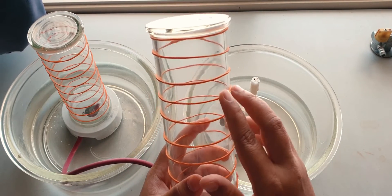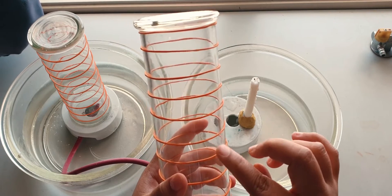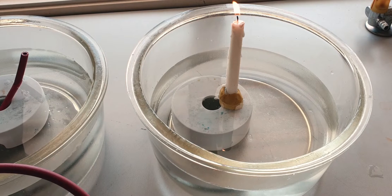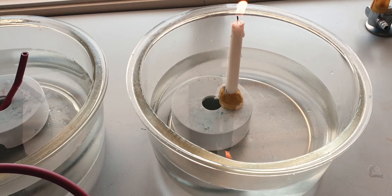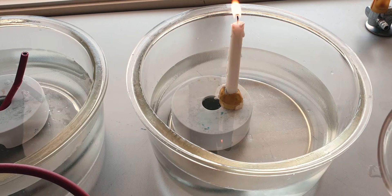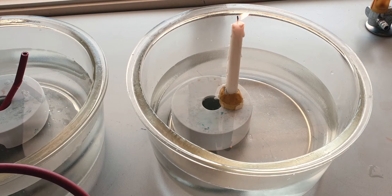Then light up the candle and invert the gas jar that contains inhaled air onto the candle. Since the inhaled air is the same as the air that we breathe in that surrounds us, so we just collect the air around us and just invert them onto the candle.